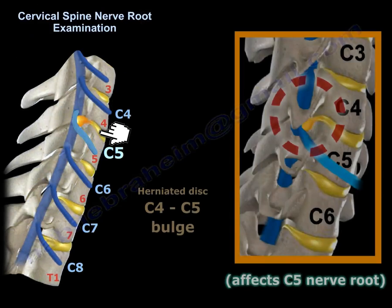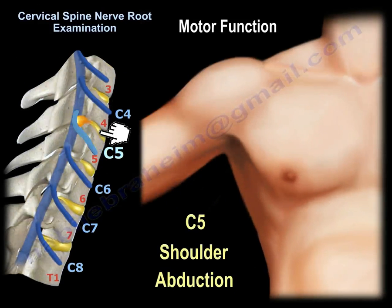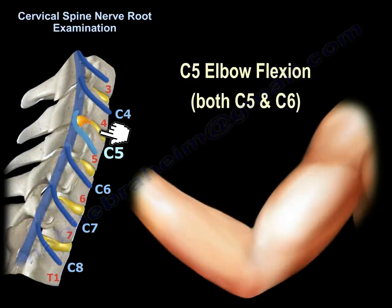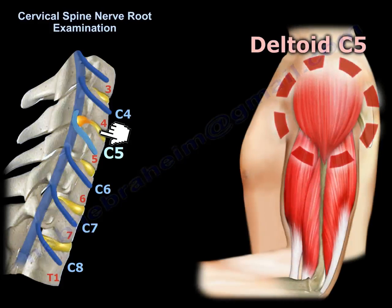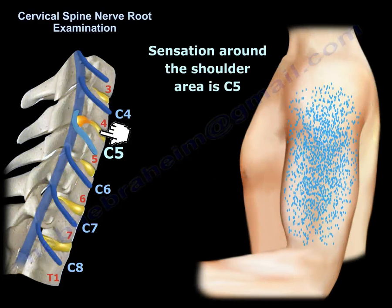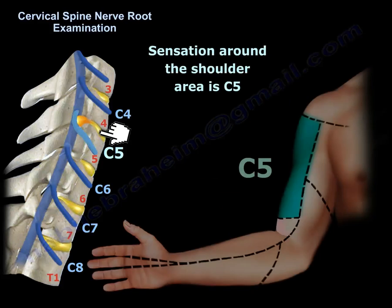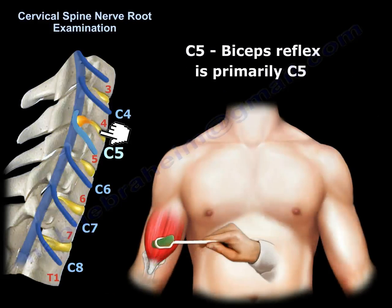When we talk about the C5 nerve root, the motor function involves shoulder abduction and elbow flexion. The deltoid is a C5 nerve root muscle responsible for shoulder abduction, and the biceps is also C5. Sensation is around the shoulder area. The biceps reflex is primarily C5.